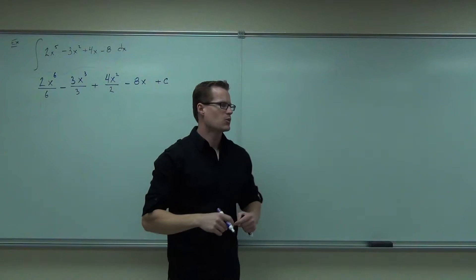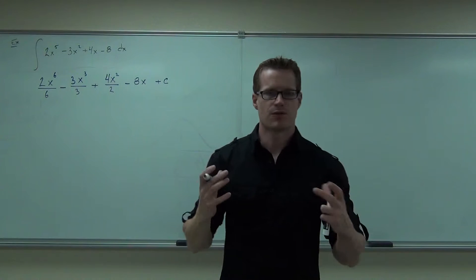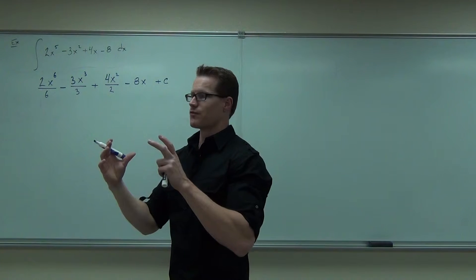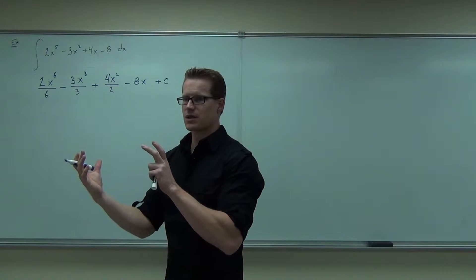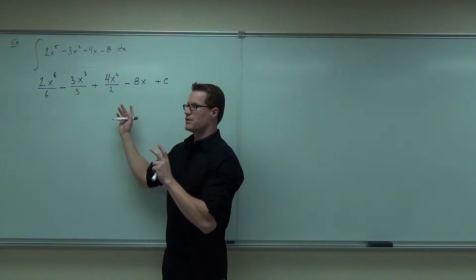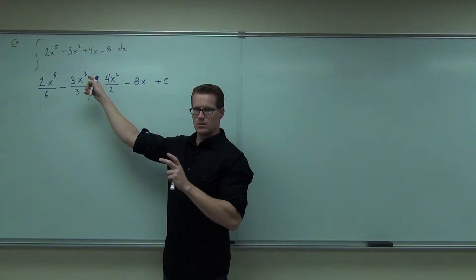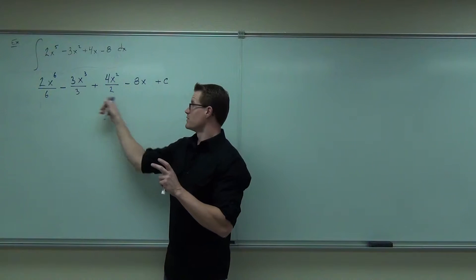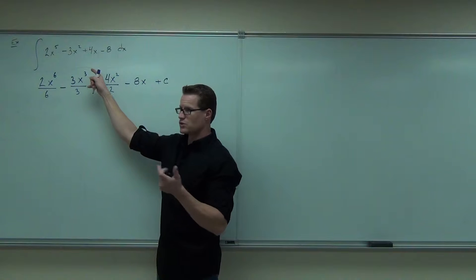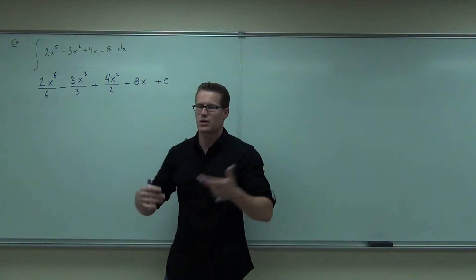Plus c is important. Again, what we're finding is a family of curves. I'm sorry, a family of area curves basically from this. This is a family of all the curves such that when I take a derivative of it, it'll give you that. That's what we're talking about. Are you with me? By the way, if you take a derivative of this, will it give you that? Certainly. That's how we found this in the first place. That's why it's called the anti-derivative.